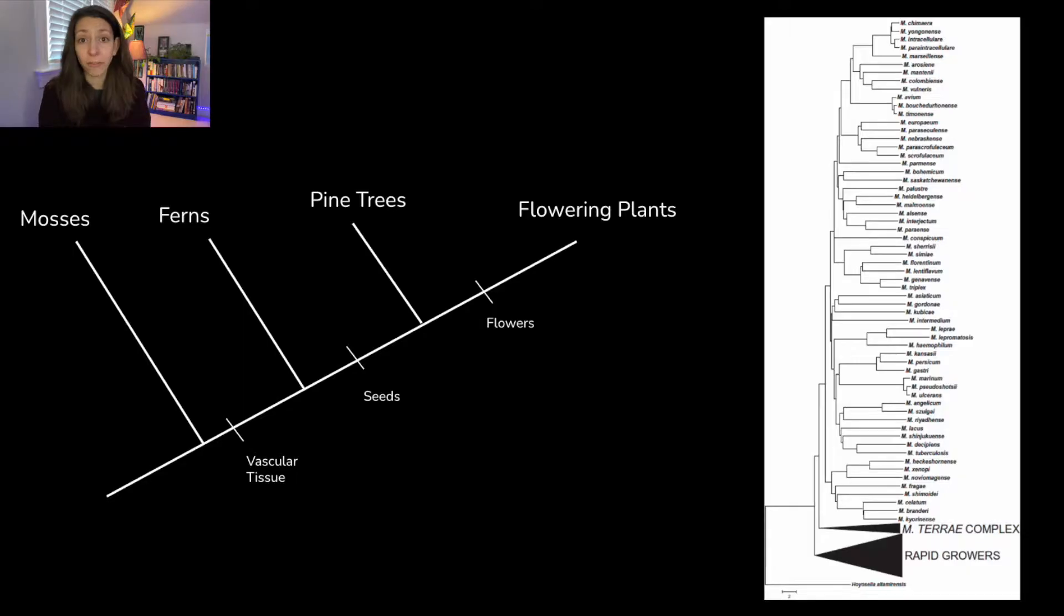Phylogeny is the study of evolutionary history and how organisms are related to each other. A lot of what we talk about in evolutionary history and phylogeny is the idea that all organisms come from a single common ancestor.